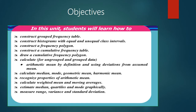In this unit, students will learn how to construct a grouped frequency table, construct histograms with equal and unequal class intervals, construct a frequency polygon, construct a cumulative frequency table, draw a cumulative frequency polygon, calculate arithmetic mean by definition and using deviation from assumed mean, calculate median, mode, geometric mean, harmonic mean, recognize properties of arithmetic mean, calculate weighted mean and averages, estimate medians, quartiles and mode graphically, and measure range, variance and standard deviation.